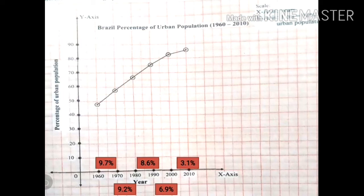The next question is: in which period did urbanization occur rapidly? Observing the graph, the rate of urbanization by decade is: 1960 to 1970 — 9.7%, 1970 to 1980 — 9.2%, 1980 to 1990 — 8.6%, 1990 to 2000 — 6.9%, and 2000 to 2010 — 3.1%. So the urbanization occurred most rapidly in the period of 1960 to 1970, with a growth of 9.7%.